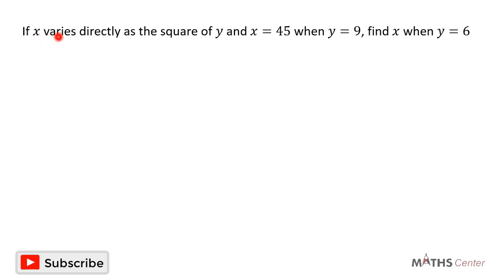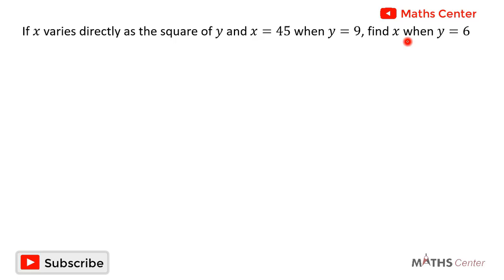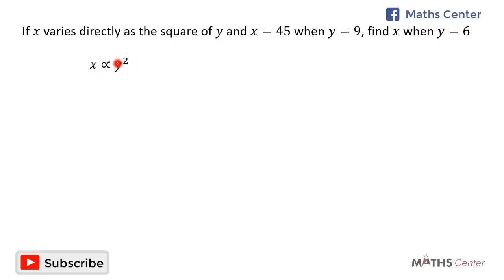If x varies directly as the square of y, and x is equal to 45 when y is equal to 9, find x when y is equal to 6. If x varies directly as the square of y, this is written as x is proportional to y squared.